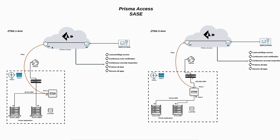Once this tunnel is established, the user can easily and securely access the application here by ZTNA Connector. By this, you can achieve all the concepts of Zero Trust Network Access by Prisma Access — because Prisma Access, by the ZTNA Connector and mobile user components, will provide privilege access for the user, continuous trust verification, inspection of all traffic, protection of all data, and securing all applications.